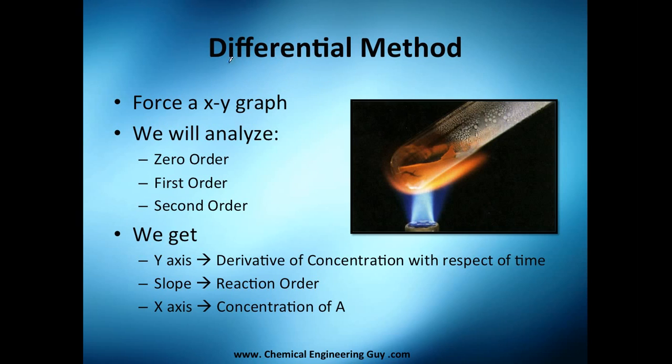The first method we're going to see is called the differential method. Why differential? Because we are working with the differential concentration of A with respect to time, so that's why it's called differential. We're going to force an x-y graph, which is y-axis and x-axis. We're not going to use y, we're going to use other variables suitable to concentration and time, and x will be concentration.